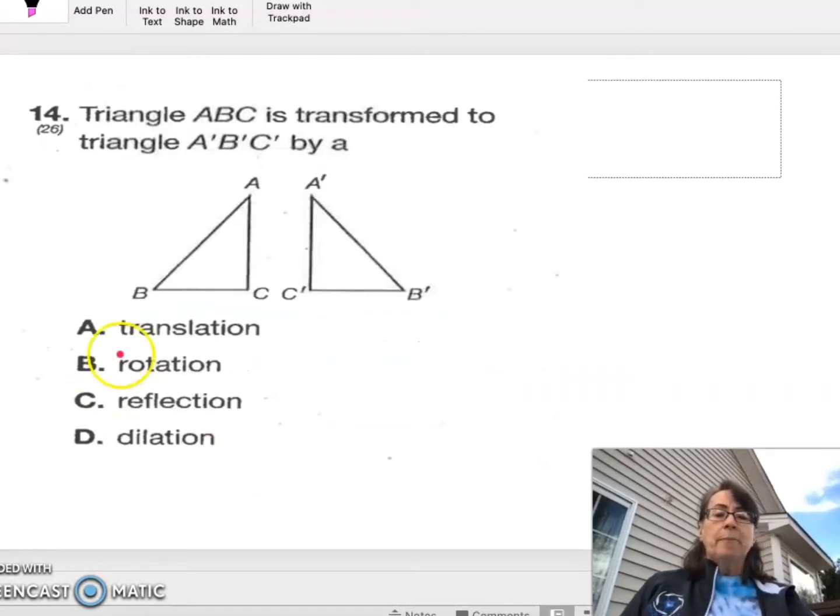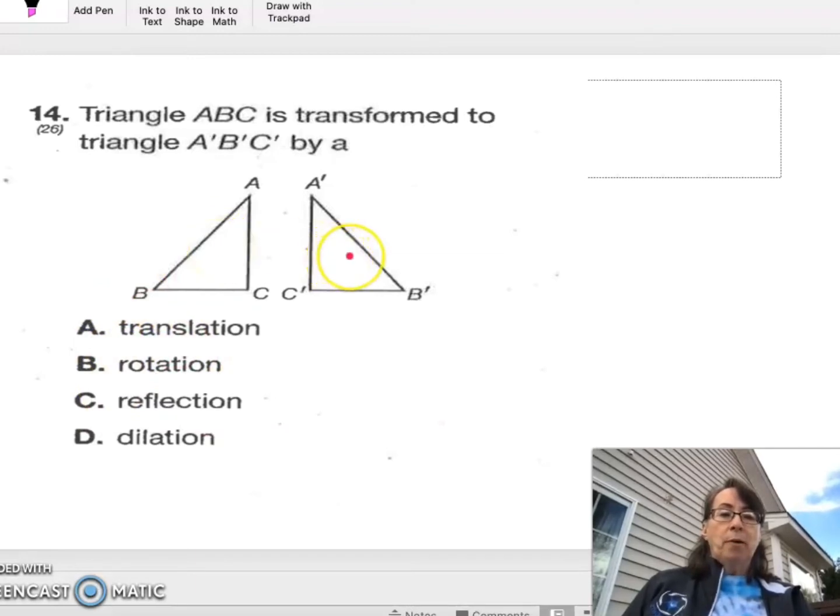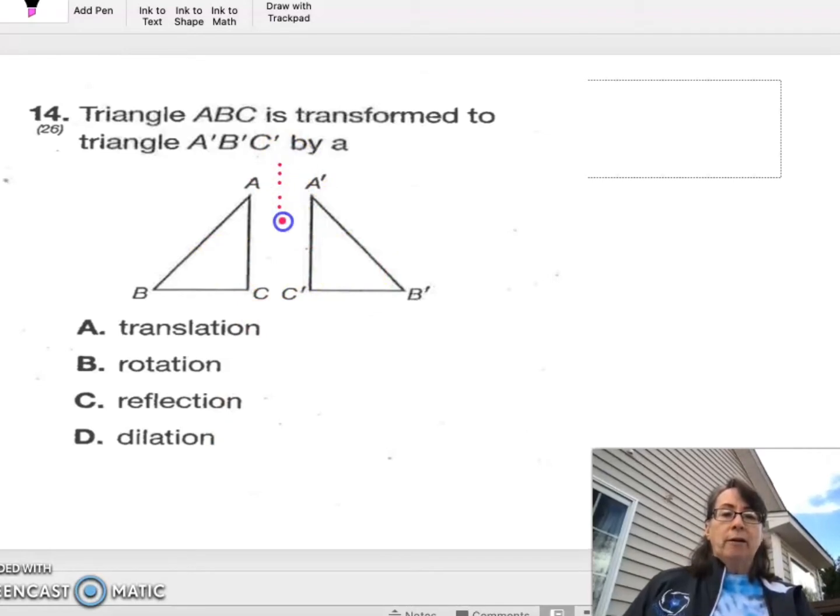Number 14. Triangle ABC is transformed to A'B'C' by a what? Translation, rotation, reflection, dilation. We're only allowed to choose one. So we're going to say that this one is a reflection. And that right here looks like that would be about a line of reflection.